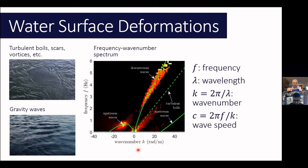We typically see something like this: we have a wavenumber axis on the x-axis and frequency on the y-axis. Everything that has a constant ratio, so everything along a straight line here, has a constant speed. Everything along this dashed green line moves at the same speed of the flow, so we call it a turbulent boil. Everything above it is faster, it has a higher frequency and higher speed, so these are gravity waves that are propagating downstream. And everything below is slower, so these are gravity waves that are trying to move upstream.